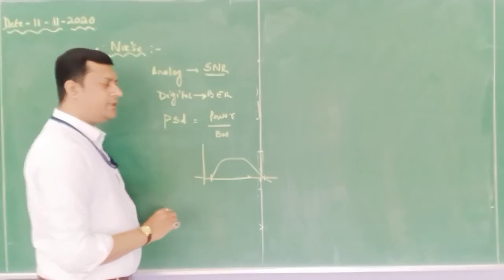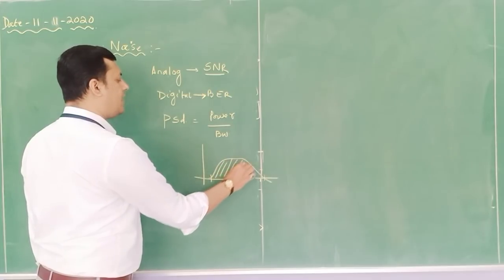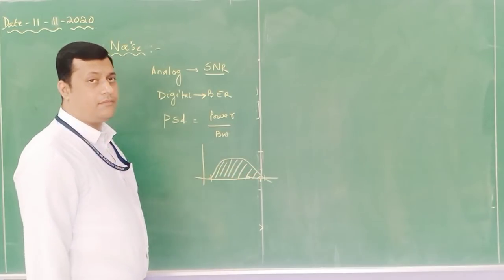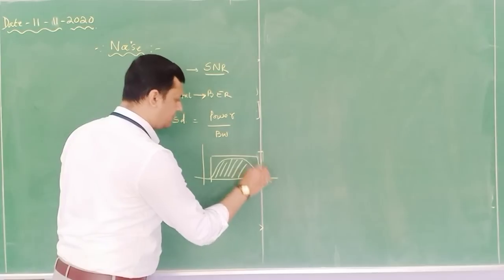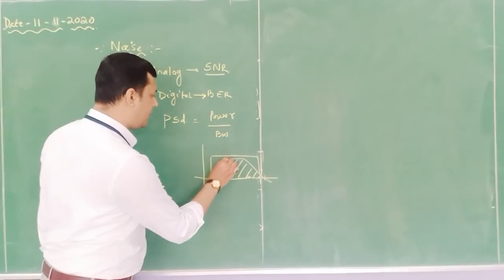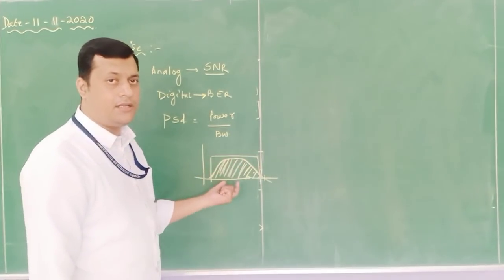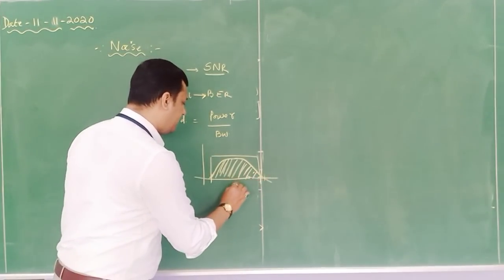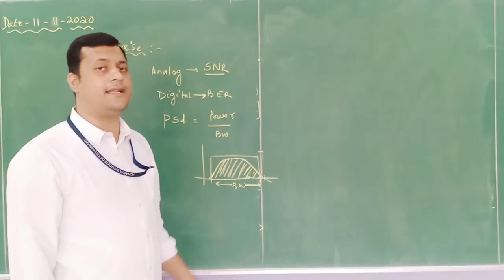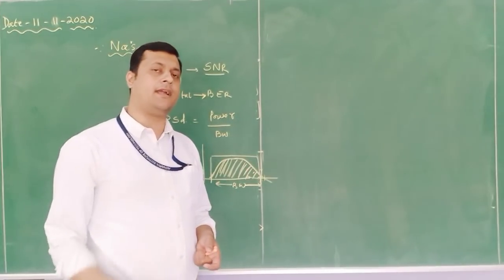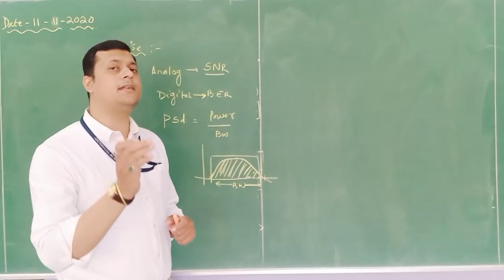Within a particular bandwidth, information is present. The power available in that particular region divided by the bandwidth of that spectrum is called power spectral density. The term 'density' itself indicates that at any point within this particular region, the density will remain constant.